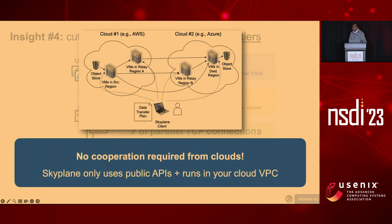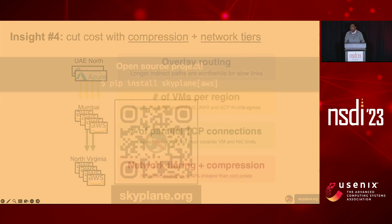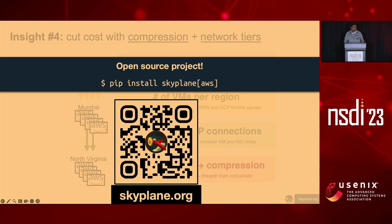All of this is feasible with absolutely no cooperation from the clouds. In practice, the user runs a Skyplane command on their laptop, which uses their cloud credentials and public VM and networking APIs to provision VMs in the cloud—in this case in AWS and Azure. Everything runs within the customer's VPC. Skyplane only uses public interfaces documented by the cloud, and therefore can be deployed incrementally today without any cooperation from vendors. It's open source and available at skyplane.org—just pip install it and run a transfer within five minutes.